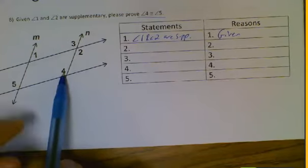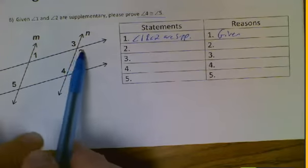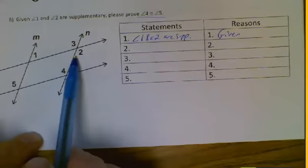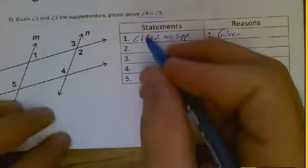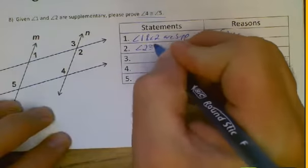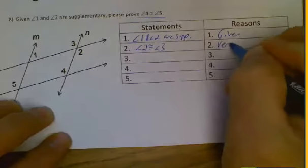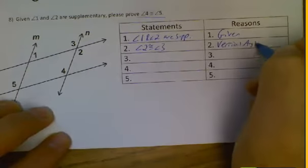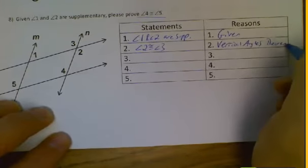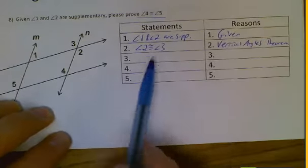So the only other thing I think in this picture that we haven't mentioned yet is that 2 and 3 are vertical angles. So, I mean, it's something. It's better than nothing. So I'm going to go ahead and put it there. Angle 2 is congruent to angle 3, and that's the vertical angles theorem. And then you just got to hope that that triggers something for you, and hopefully you can see it.